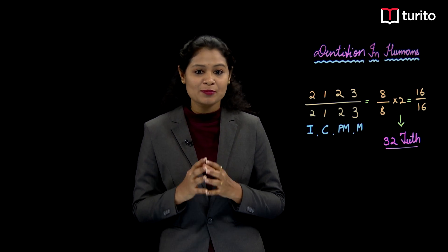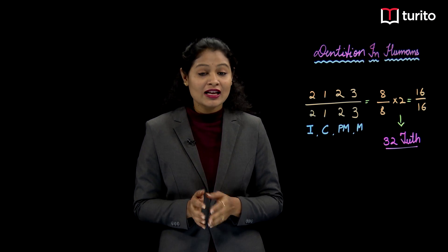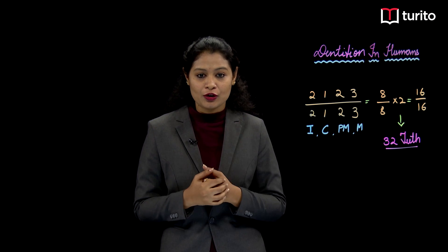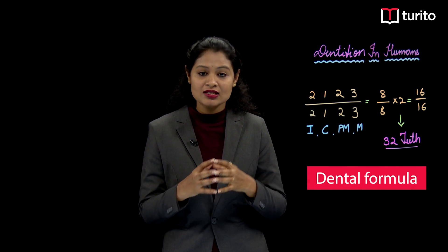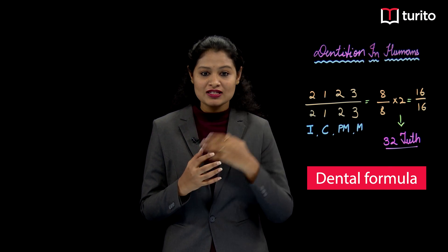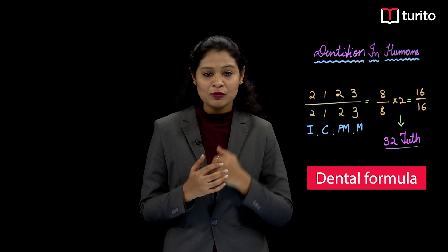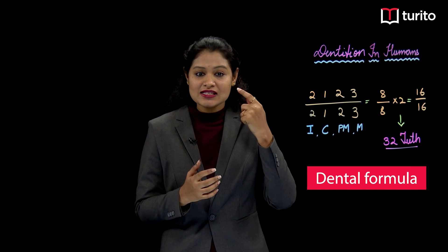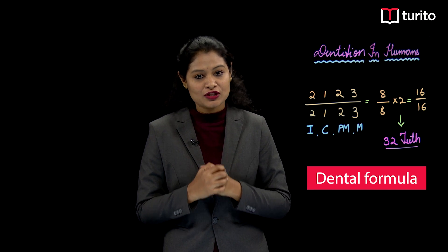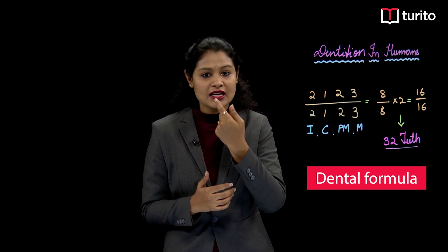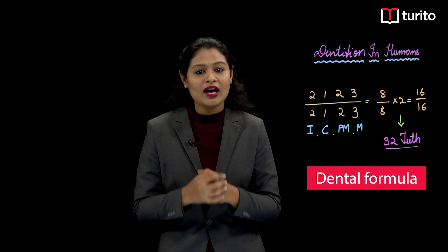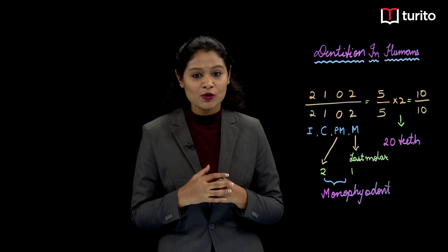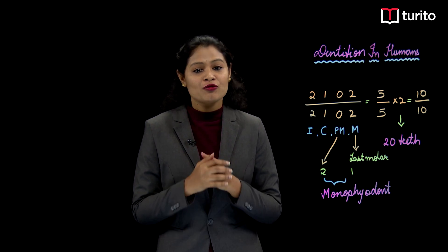An adult human will have 32 teeth. Let's see the arrangement: on each side of the jaw we have 2-1-2-3, representing incisors, canines, premolars, and molars. So we have eight teeth present on each side of the jaw. On the upper jaw we have eight plus eight equals sixteen, and on the lower jaw we have eight plus eight equals sixteen, giving us 32 teeth in total.